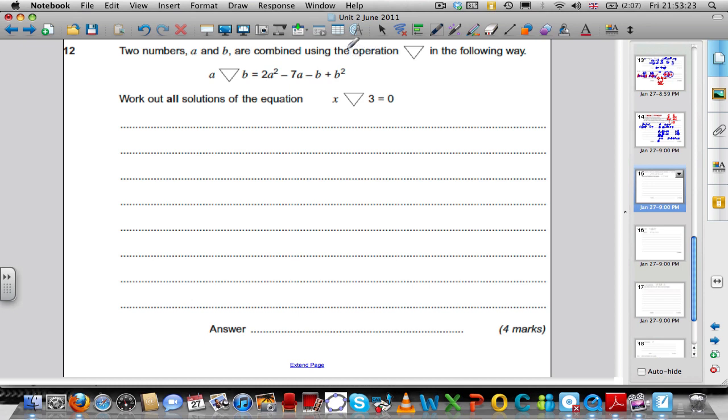A and B are related or combined in this operation to mean the following. A and B are related if you do the following to A and B. You square A and double it, then subtract 7A, then subtract B, then add B squared.